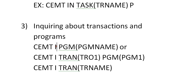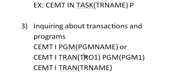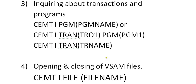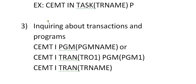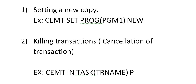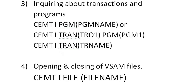We can also enquire about transactions and programs. You can give CEMT I PROGRAM and the program name to identify a program. If you want to identify a transaction, you give CEMT I TRANSACTION and the transaction name. For example, to enquire about program PGM1, this is the method for identifying the program name. This is the third functionality of CEMT.